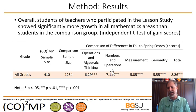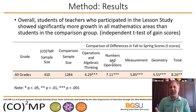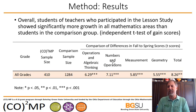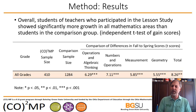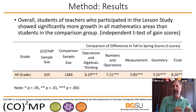Interestingly, the lesson study teachers only looked at one domain: improving students' operations and algebraic thinking. It's not surprising that number and operations also showed a large degree of difference since they're highly connected. What is really intriguing is that measurement and geometry — things not considered highly similar to operations and algebraic thinking — still showed lesson study students statistically significantly outscoring the comparison group.